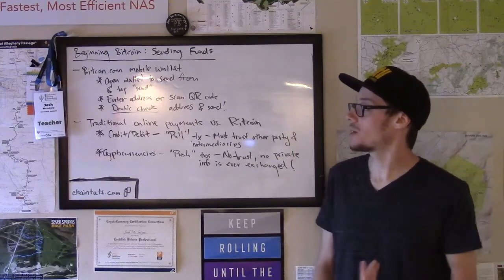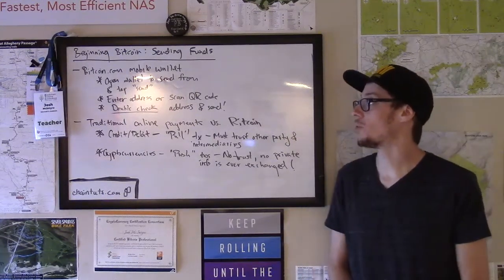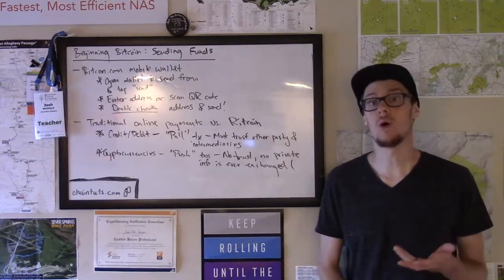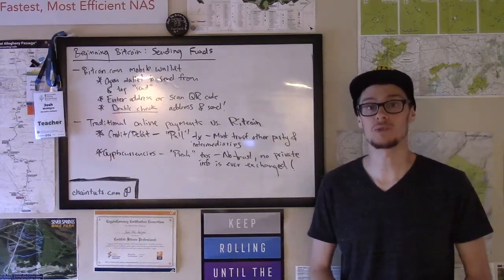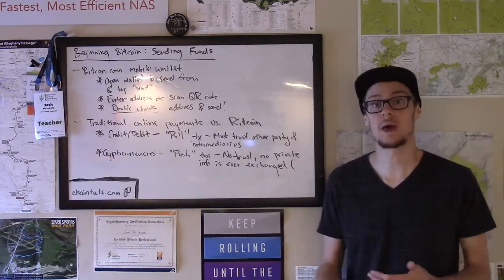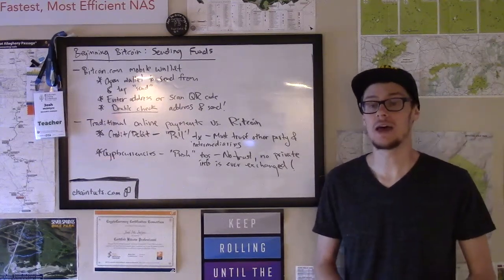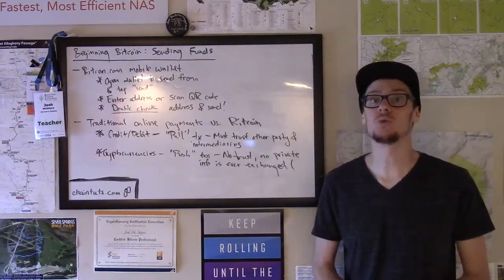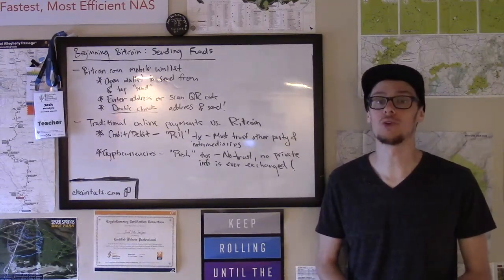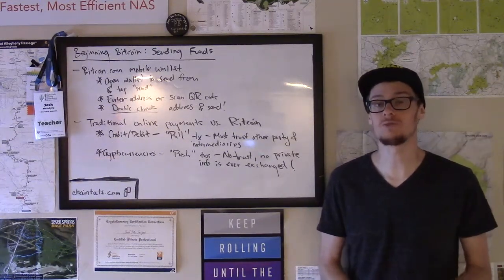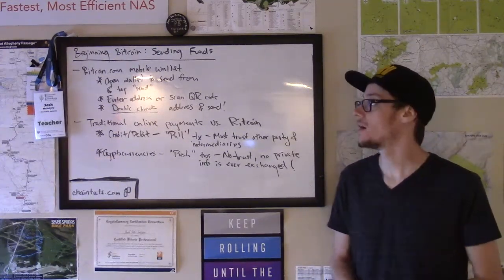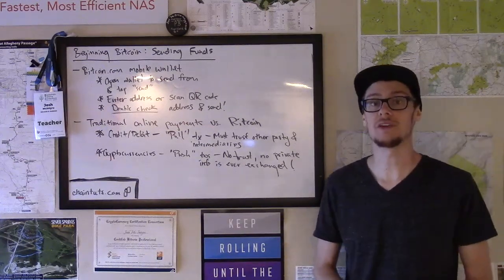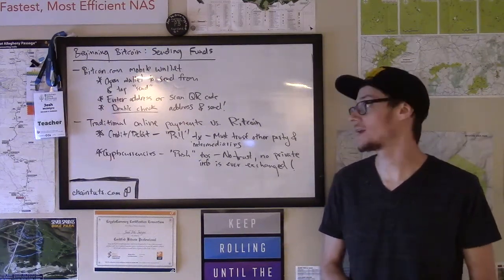Using the Bitcoin.com mobile wallet, you can have multiple wallets for different purposes — maybe for spending or for a small business. You'll want to open up the wallet that you want to send from, then tap the send button at the top of the screen.